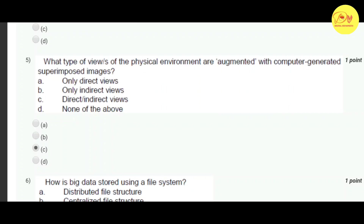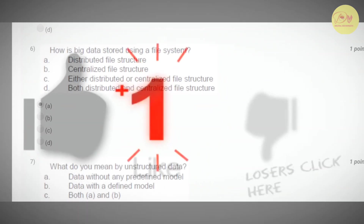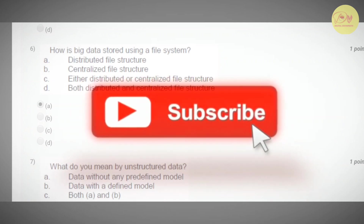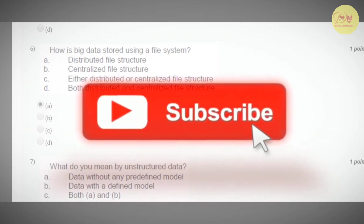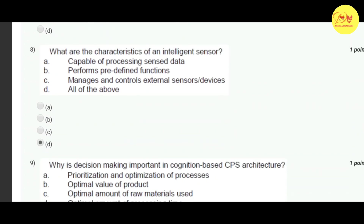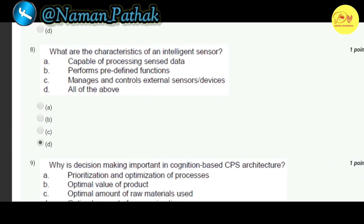Our sixth question: how is big data stored using a file system? Correct option is A — distributed file structure. Our seventh question: what do you mean by unstructured data? Correct option is A — data without any predefined model. Our next question: what are the characteristics of an intelligent sensor? Correct option is D — all of the above, that is: capable of processing sensed data, performs predefined functions, and manages and controls external sensors or devices.